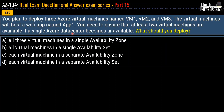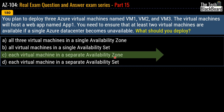Question 180: You plan to deploy three Azure virtual machines named VM1, VM2, and VM3 to host a web app named App1. You need to ensure that at least two virtual machines are available if a single Azure data center becomes unavailable. Options: all three VMs in a single availability zone, all in a single availability set, each VM in a separate availability zone, or each VM in a separate availability set. The correct answer is option C: each virtual machine in a separate availability zone.